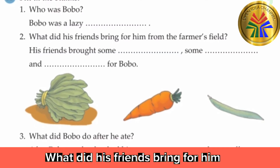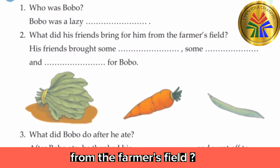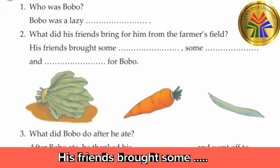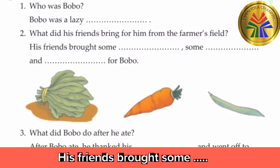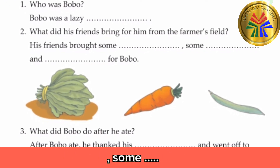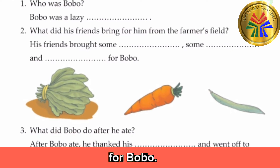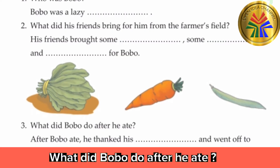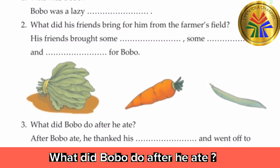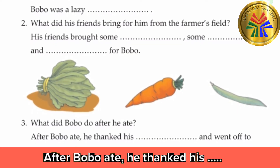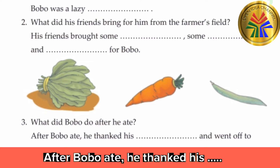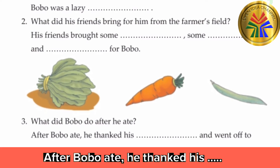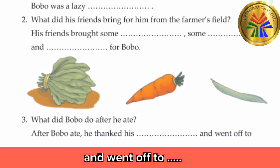Fill in the blanks. 1. Who was Bobo? Bobo was a lazy — answer: rabbit. 2. What did his friends bring for him from the farmer's field? His friends brought some lettuce, some carrots and some beans for Bobo. 3. What did Bobo do after he ate? After Bobo ate, he thanked his friends and went off to sleep.